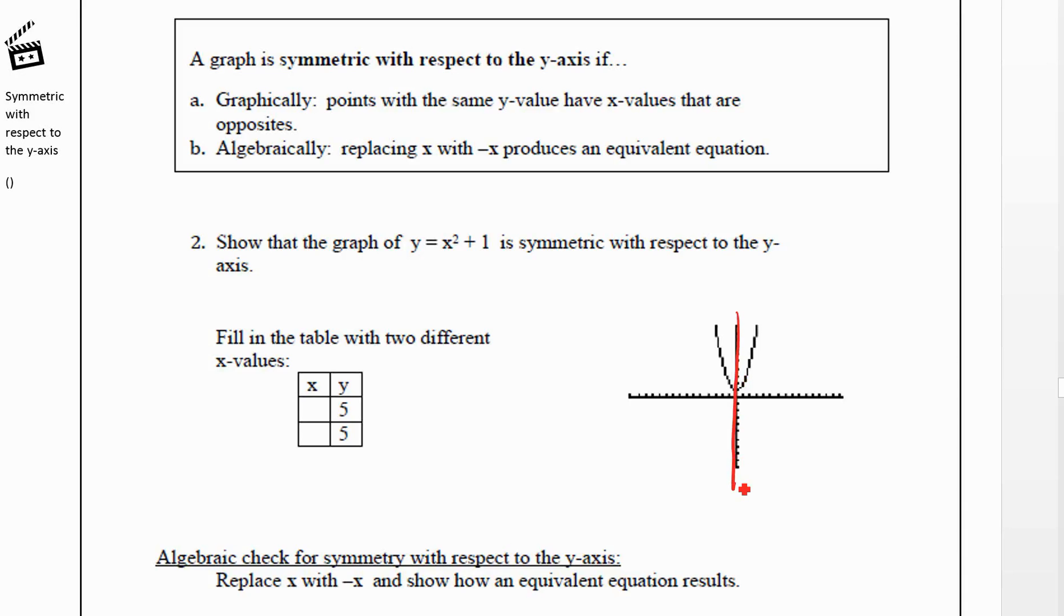So another way of saying that, graphically, is that points with the same y-value have x-values that are opposite. Now points with the same y-value, that means if we drew a horizontal line, all the points have the same y-value. So we're saying here, this point on that line and this point have the same x-values except one is positive and one is negative.